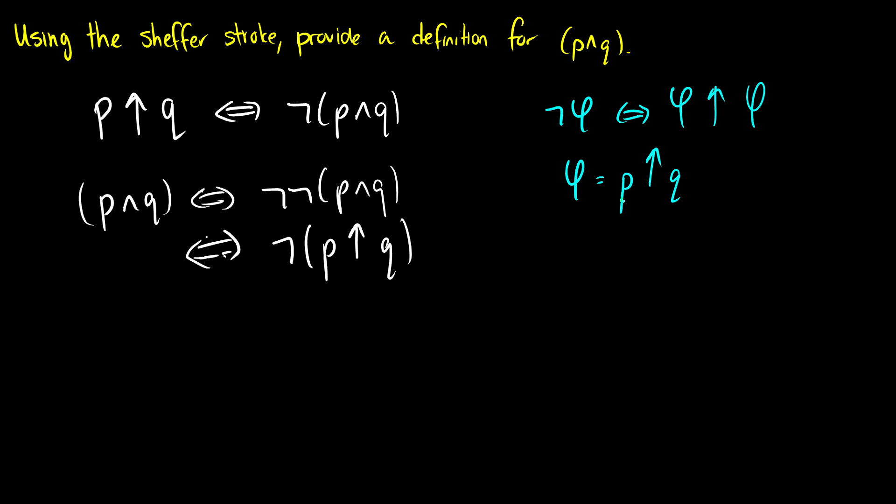We just take this not phi equivalent to phi up phi, we just substitute phi as p up q. And if we do that then we can get the formula for not (p up q). So this is equivalent to (p up q) up (p up q).